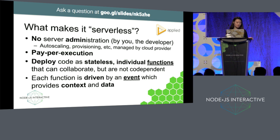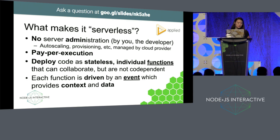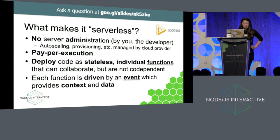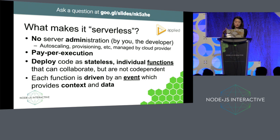First tenet: the developer doesn't have to worry about server administration — provisioning, all of that. Second: pay-per-execution. With other providers like Heroku, Elastic Beanstalk, or Google App Engine, you're paying for an app that's living there even if nobody's using it at 3am. With serverless, your code gets split into functions — we already write in functions, so why not deploy it that way? Each function is stateless with its own resources, managed by the cloud provider. Finally, it's event-driven: for pay-per-execution, you need something to trigger each function, which provides the context and the data.